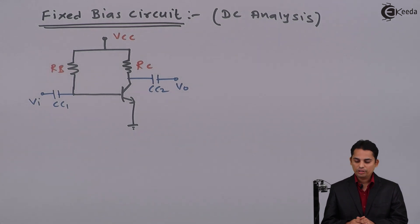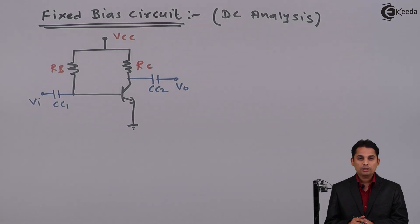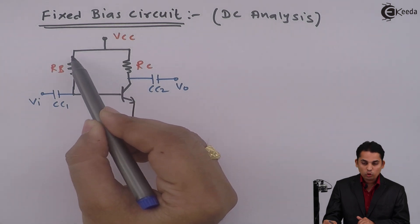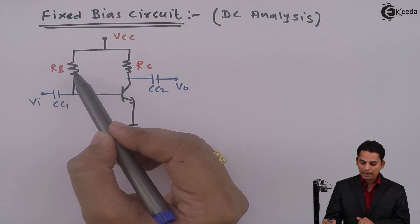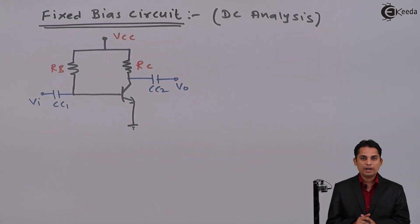Hello students, in this lecture we are going to see DC analysis of fixed bias circuit. In front of you there is a circuit. We will first analyze whether this is a fixed bias circuit or not. In a fixed bias circuit, a resistor is applied at the base and connected to the VCC. From VCC there are two connections: one to the base through base resistor RB, and another to the collector. So this is a fixed bias circuit.